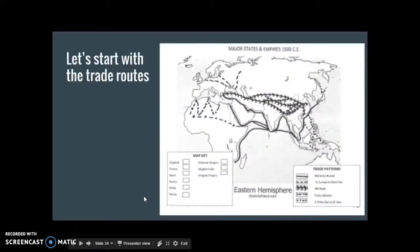Here is a map of the trade routes that you need to know. But first, I want you to stop and think for a minute. Why do you think people trade? Why is trade so important? Something you need to remember is that when people trade tangible items, like foods or gems or products, when that stuff gets traded, there's other stuff like ideas that get traded as well.